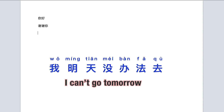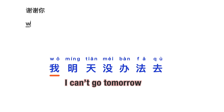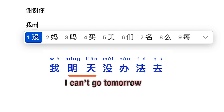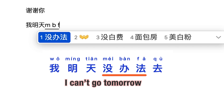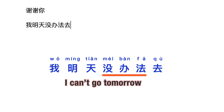Now let's try to type out a whole sentence: 我明天没办法去 — 'I can't go tomorrow.' Type the characters and click the space bar. 明天 is also a common word, so type out its initial sounds and press the space bar. 没办法 is a common phrase so type it together, then 去 by itself.